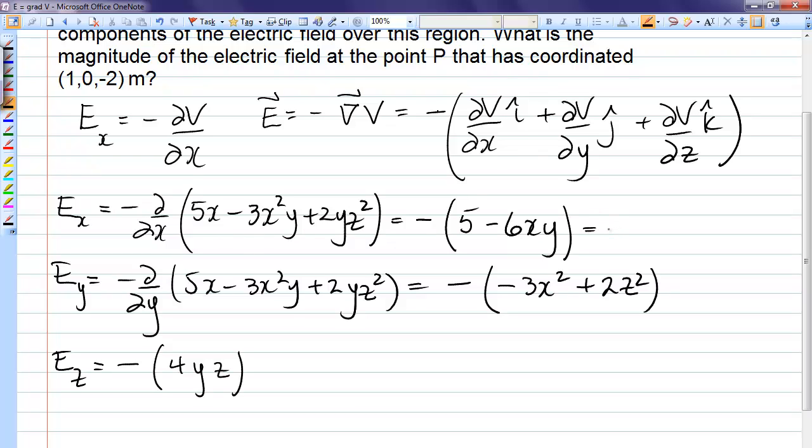Let's go ahead and substitute in the coordinates. For x, we substitute in 1. For y, we substitute in 0. So the x component is just negative 5.